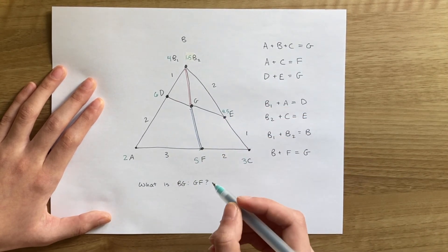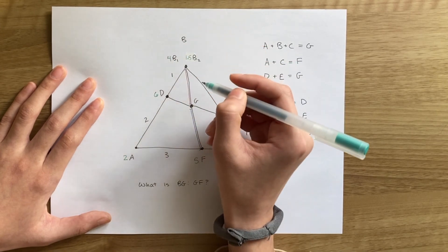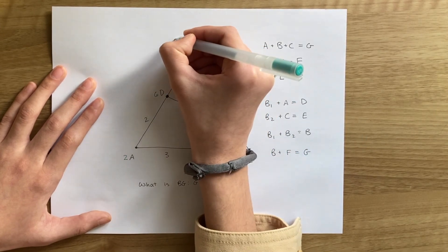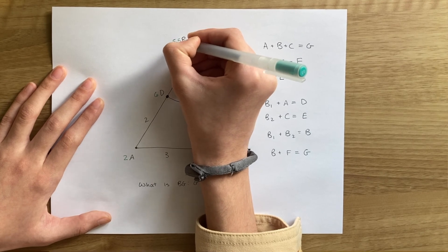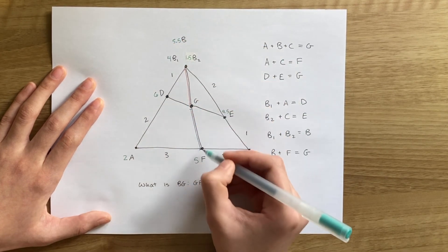This means B has a mass of 1.5 plus 4, which is 5.5. Since G is the center of mass of B and F, it has a mass of 10.5.